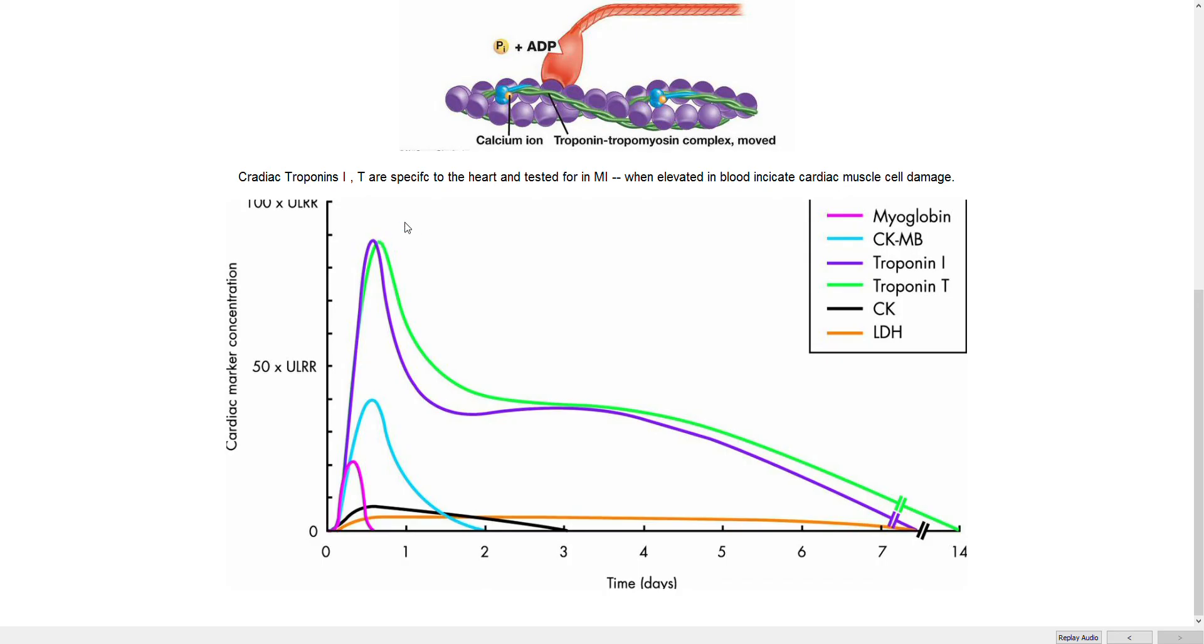So when heart cells are damaged, they will release these components, troponin I and T, into the bloodstream and you will see elevated levels in the plasma.